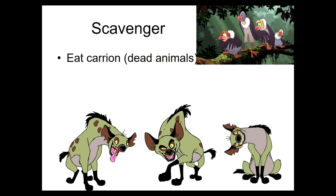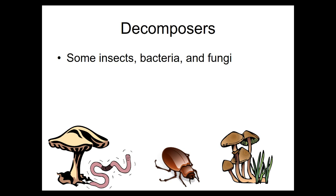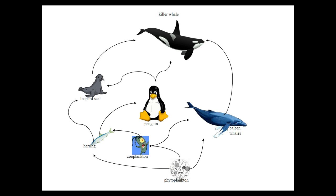Scavengers eat carrion — the fancy name for already dead things — like hyenas and vultures. Decomposers include insects, bacteria, and fungi. Decomposers have an extremely important role: they break down the nutrients so that they can go back in as things that feed the producers, that make the food that feeds everything else. They complete and make it a cycle — we have to be able to cycle matter.